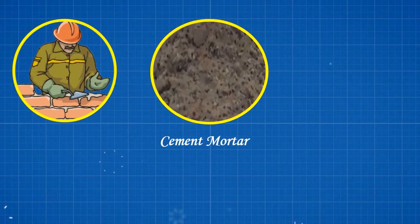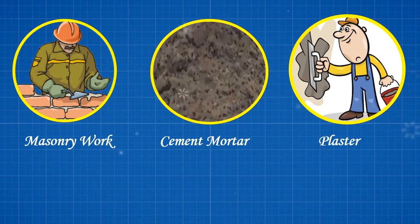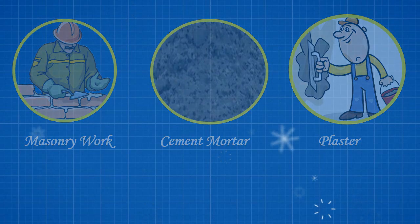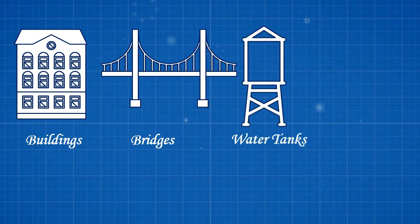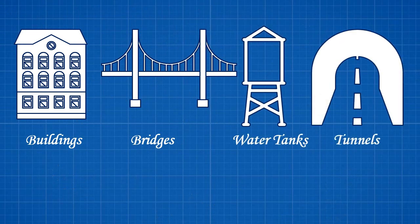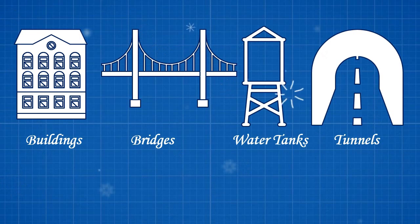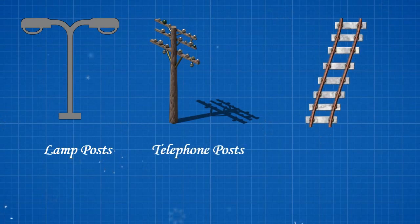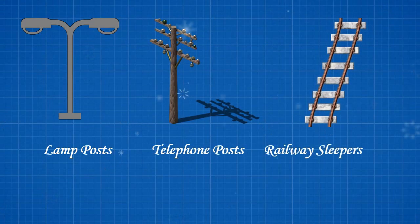Cement mortar is used for masonry work, plaster, pointing, etc. Cement concrete is used for the construction of various structures such as buildings, bridges, water tanks, tunnels, etc. Also, cement is used for lamp posts, telephone posts, railway sleepers, etc.